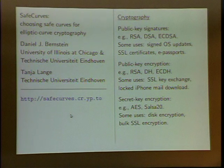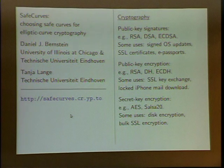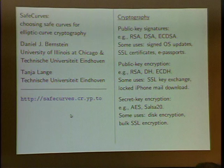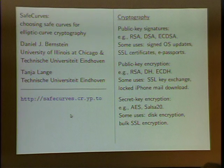A few quick words on public key cryptography and where elliptic curves fit in. Safe curves — the curves stand for elliptic curves — are part of public key cryptography. You use public key cryptography when you're signing e-passports, issuing certificates, or doing code signing. Elliptic curves, RSA, and DSA — fine field-based signatures — are typical examples.